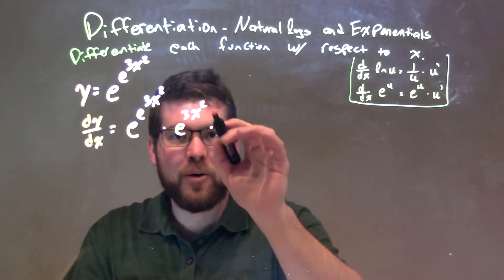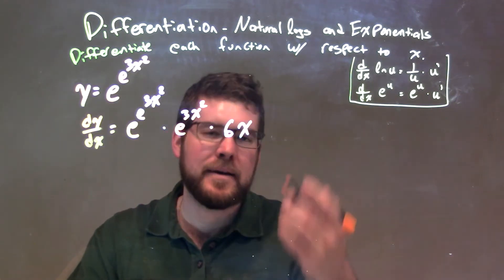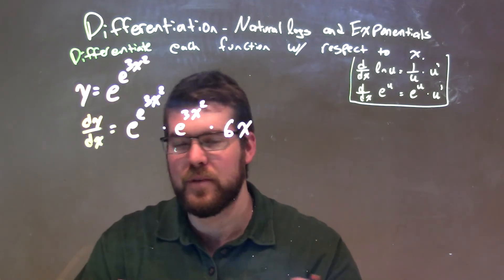Now that exponent involves the power rule. 2 comes down. 2 times 3 is 6, and we have 6x. Subtract the exponent by 1. 2 minus 1 is 1, so we leave it as this.